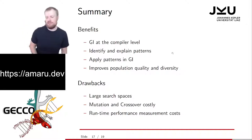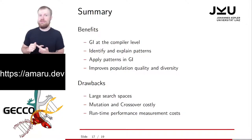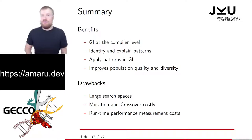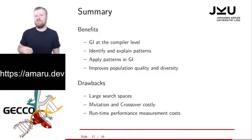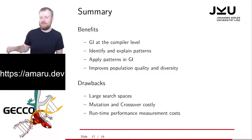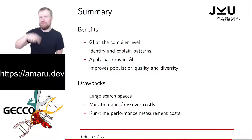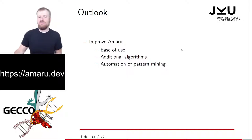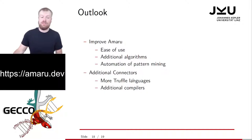Some benefits of the Amaro framework are that you can use GI at the compiler level, identify and explain patterns from your experiments, apply these patterns to implement improvements, and overall improve population quality and diversity in GI runs. The drawbacks are a large search space, costly runtime performance measurement — because in the compiler you have to measure everything 200,000 times instead of 10 to 20 times — and costly mutation and crossover operations due to the recursive syntax graph evaluation. As an outlook, I'm going to improve Amaro for ease of use, add additional algorithms, automate pattern mining more, add connectors to more Truffle languages, and in the future potentially to additional compilers.